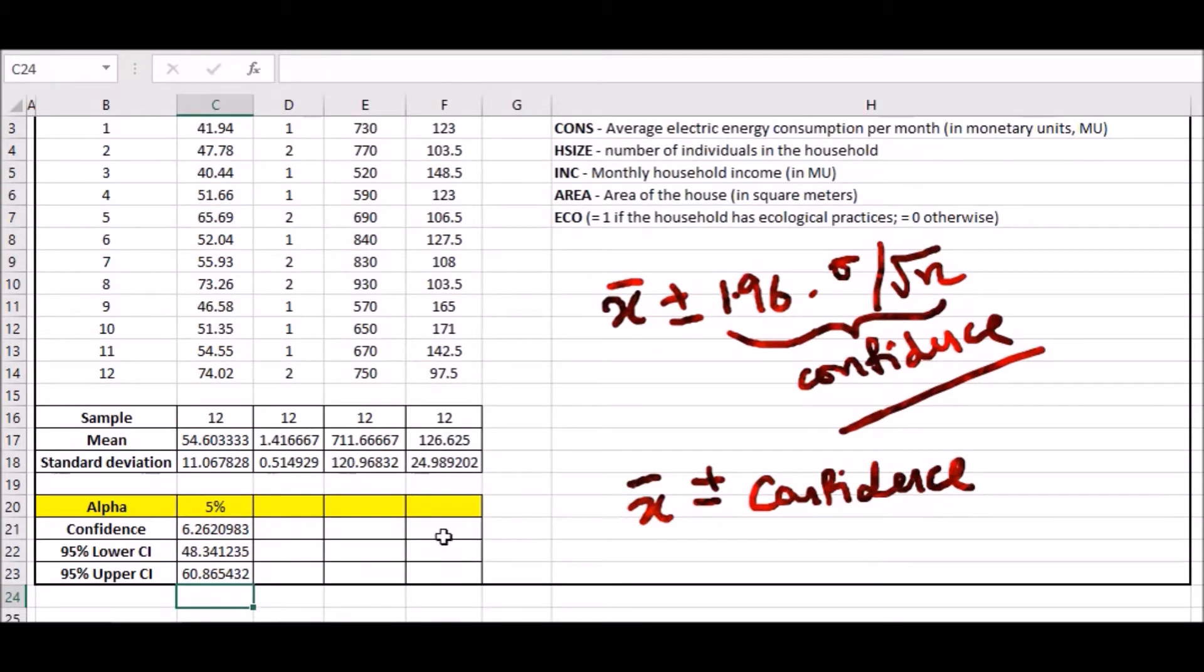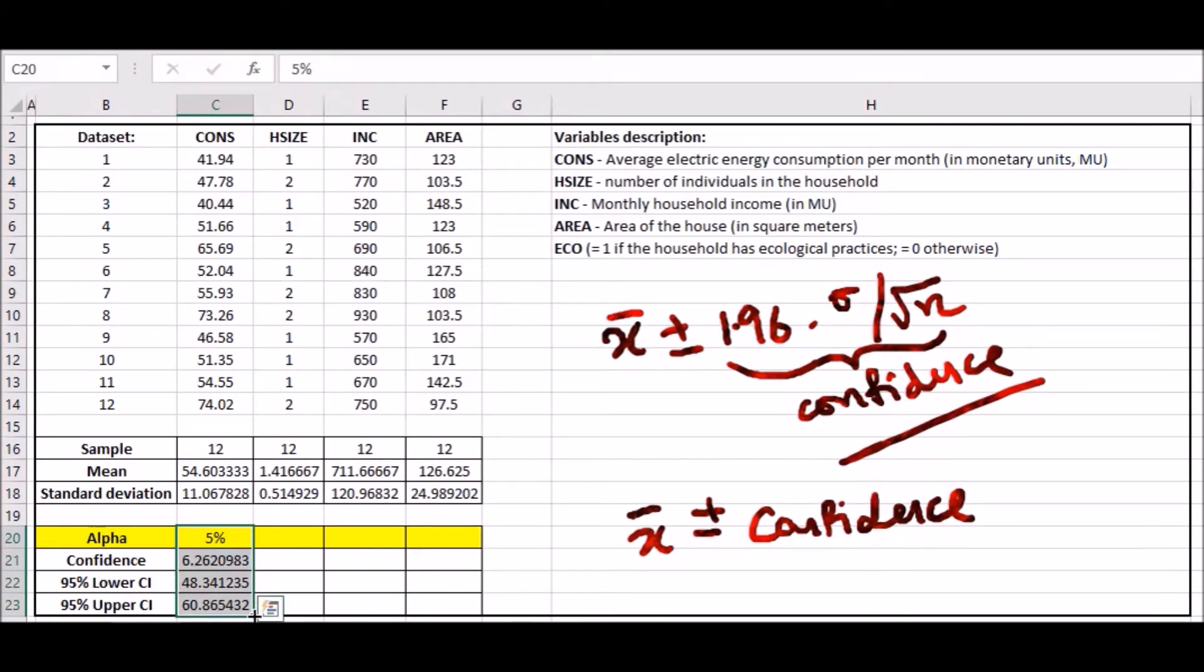Now just drag across and we're done. You have your confidence... Hold on. This is 5%, so you don't drag here. Sorry, that's my bad.